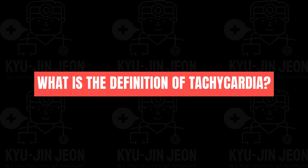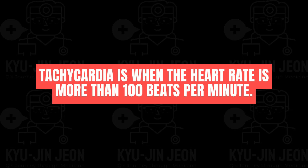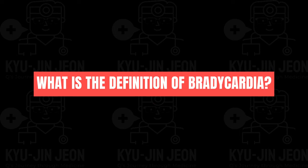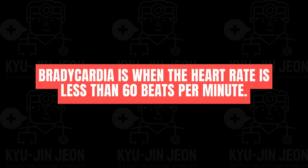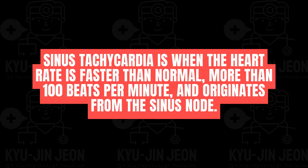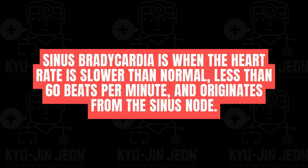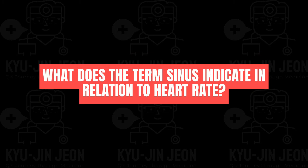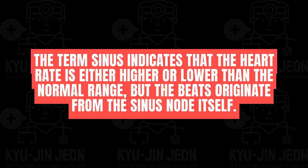Tachycardia is when the heart rate is more than 100 beats per minute, while bradycardia is when it is less than 60 beats per minute. Sinus tachycardia is a heart rate faster than 100 bpm originating from the sinus node. Sinus bradycardia is slower than 60 bpm also originating from the sinus node. The term 'sinus' indicates that the beats originate from the sinus node itself, regardless of whether the rate is high or low.